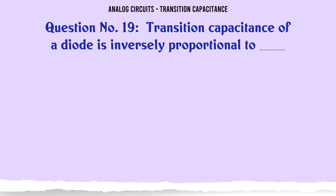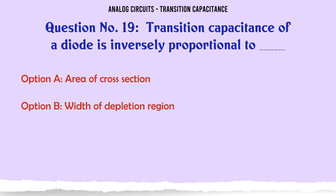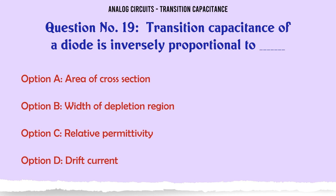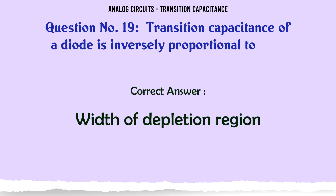Transition capacitance of a diode is inversely proportional to: A: Area of cross-section, B: Width of depletion region, C: Relative permittivity, D: Drift current. The correct answer is Width of depletion region.